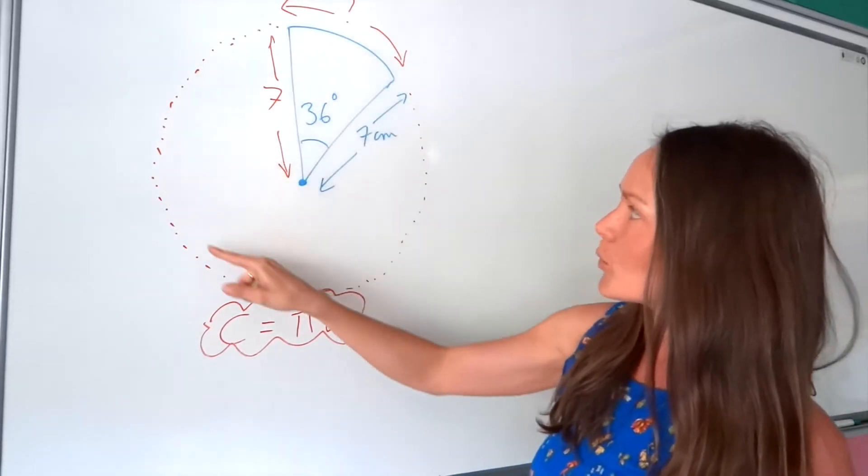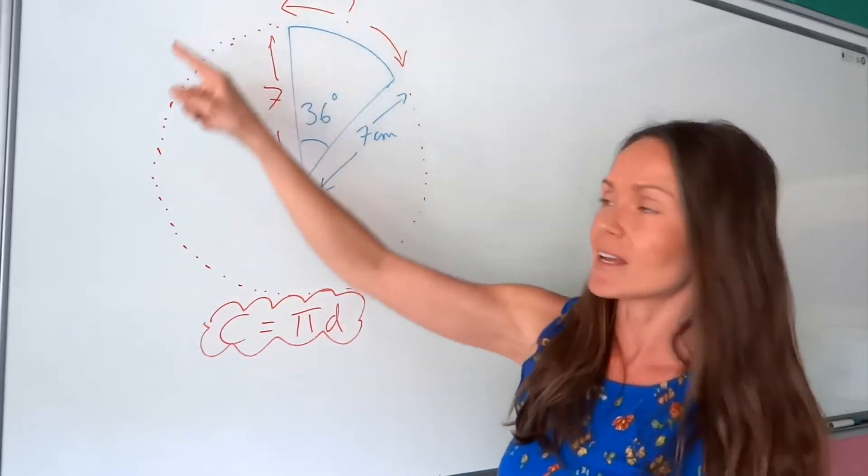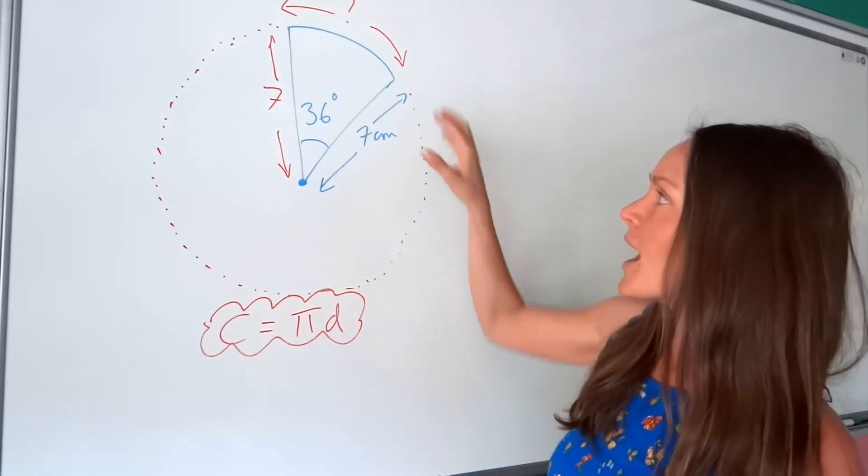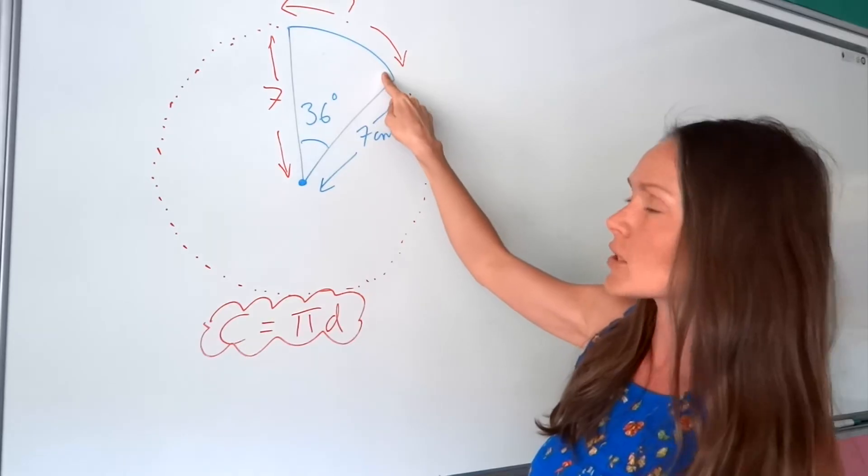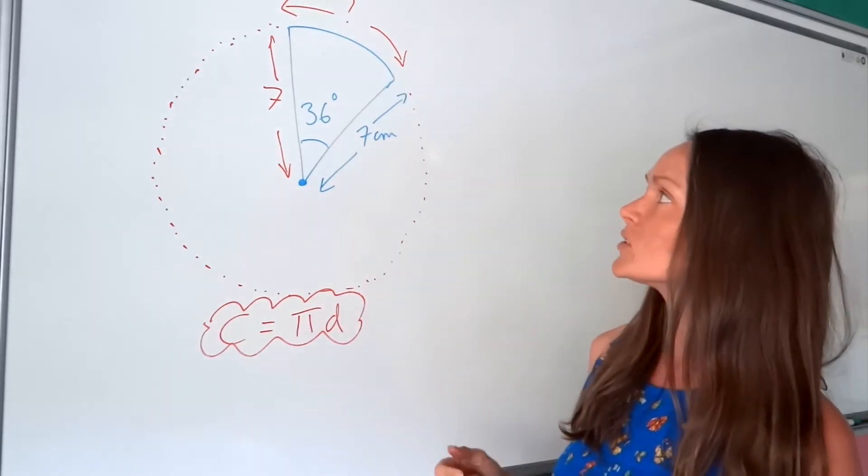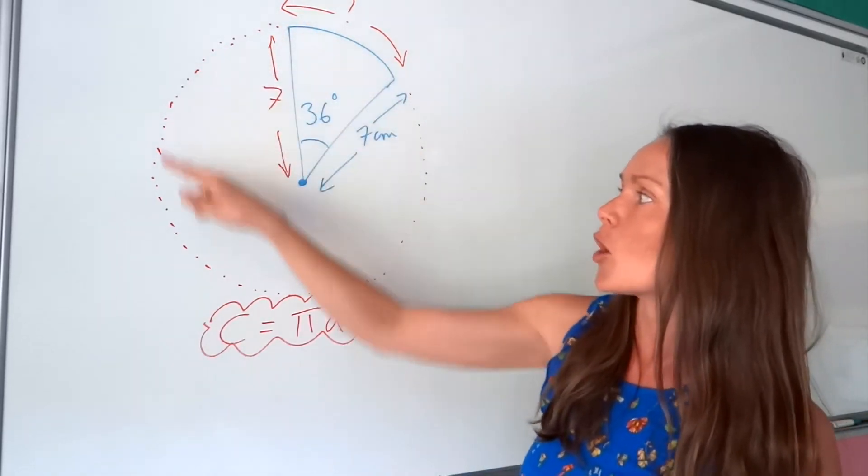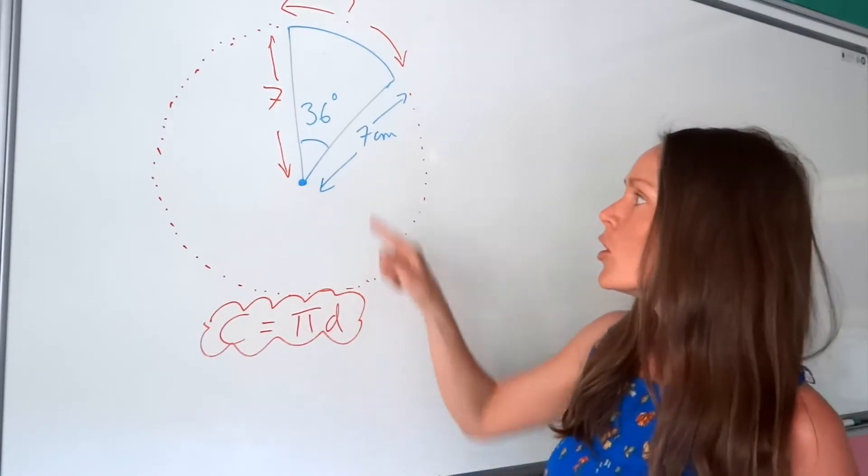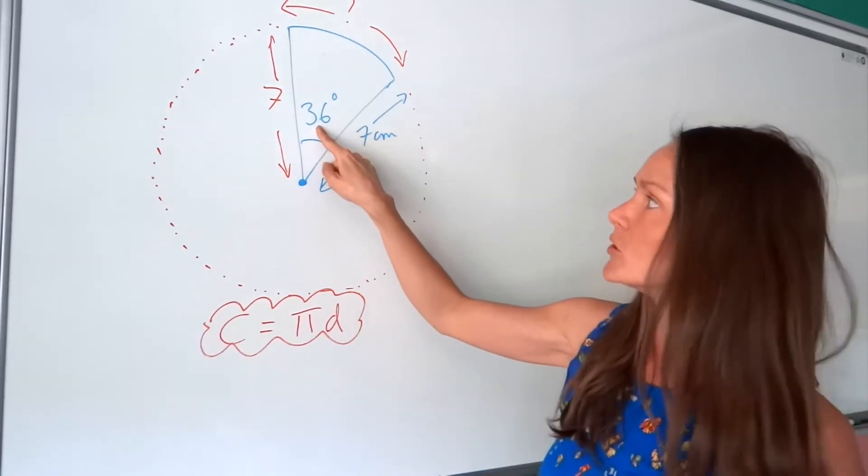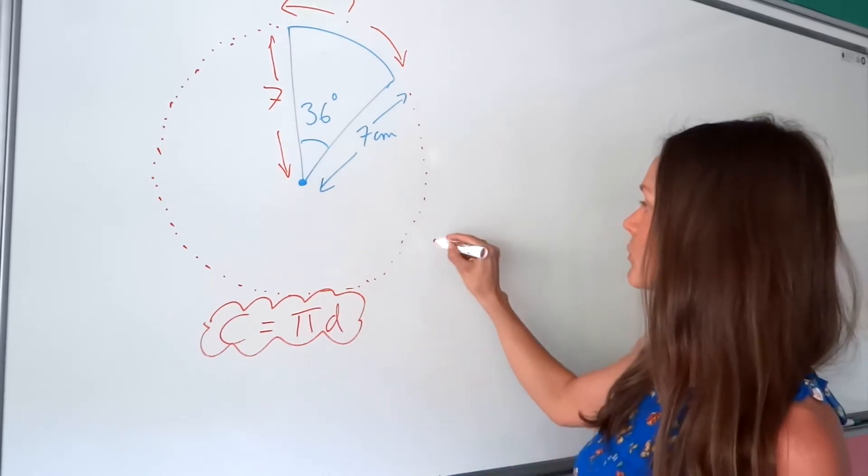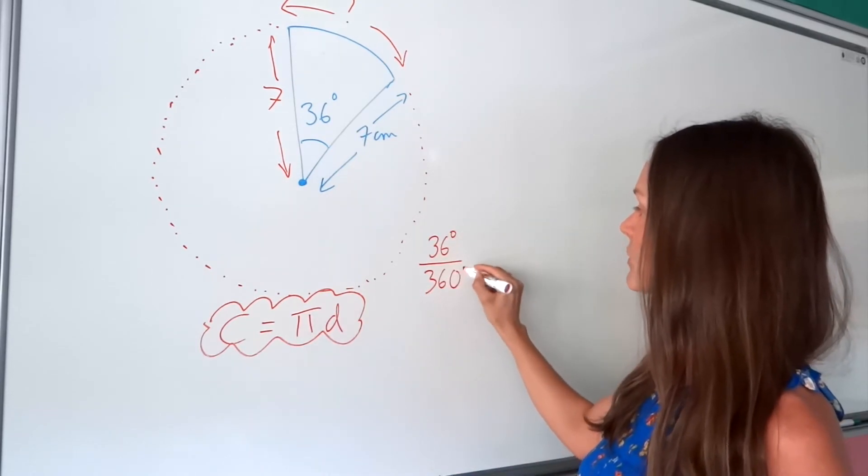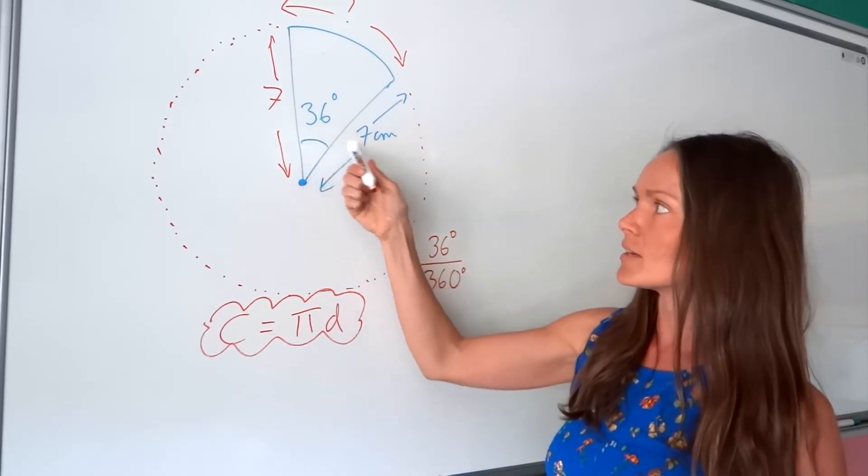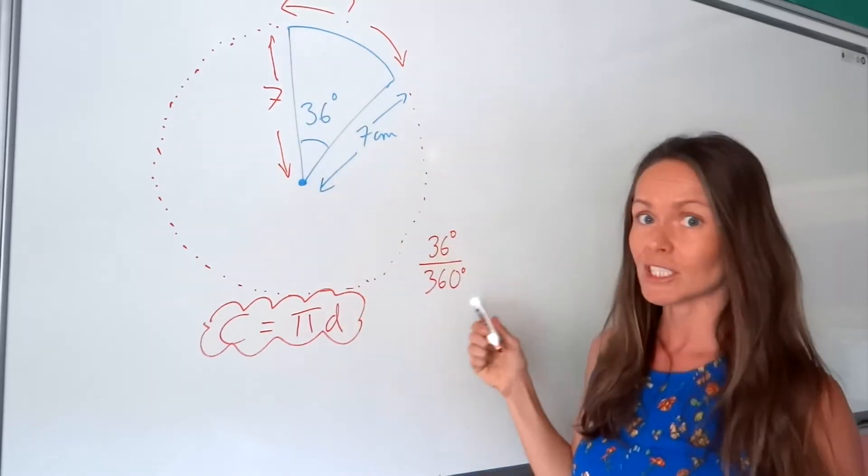So I've just drawn here, with these dotted points here, what the circle would look like if it was a whole circle. And we are just working out just this little part of the circumference. So we need to work out what fraction of a circle this sector is. Well, fortunately we know the degrees are 36 here. So I'm going to write as a fraction this sector in terms of degrees. So it's 36 degrees out of one full circle, which is 360.